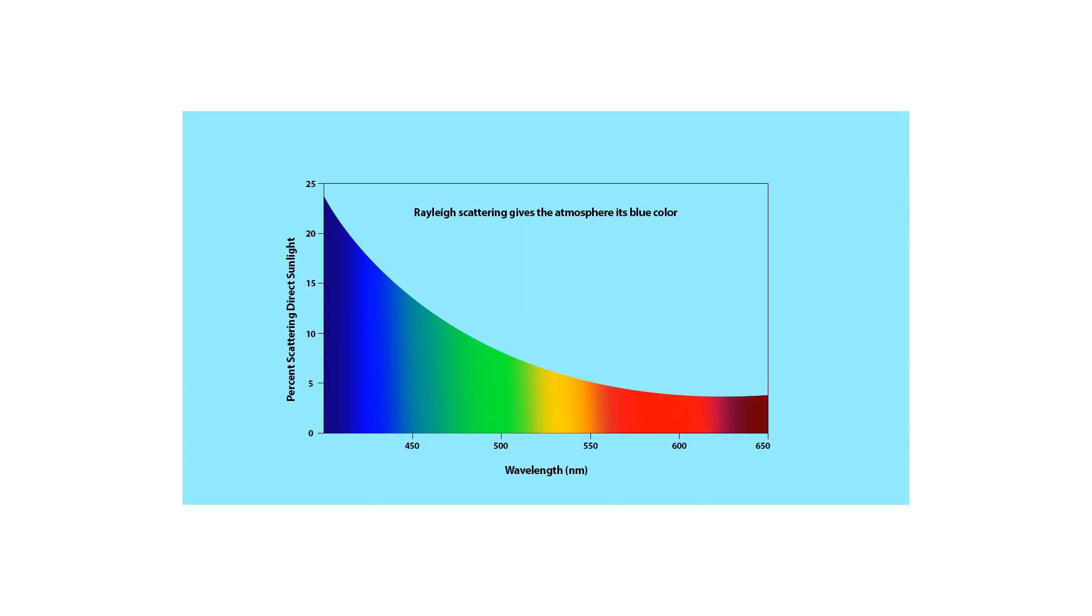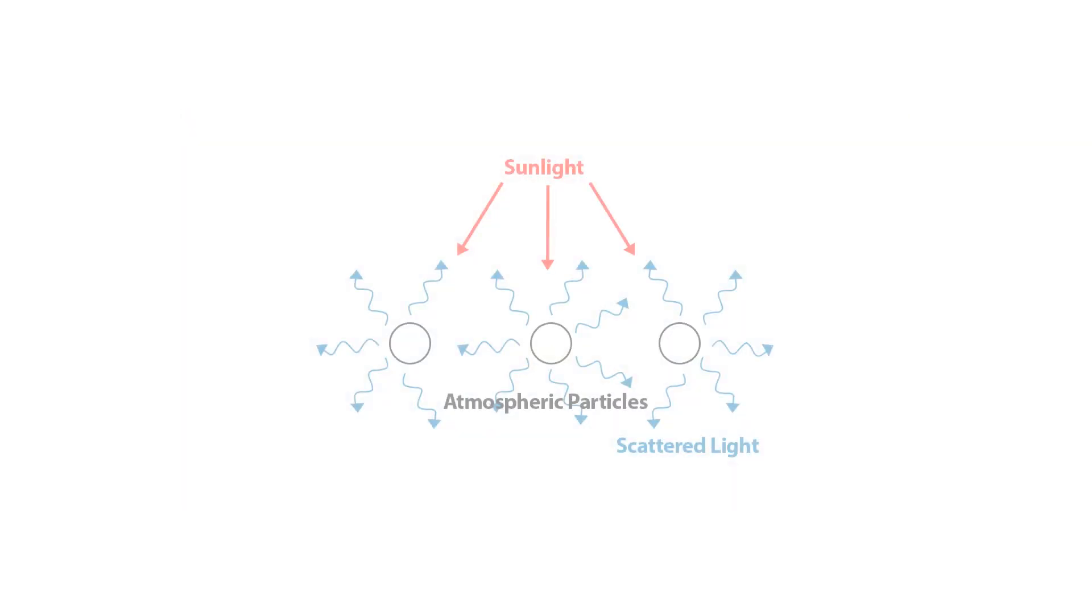From violet to red, remember VIBGYOR. Scattering of light says that blue light of the spectrum is scattered more than the red light. The greater is the frequency of light, or lower is the wavelength, the more it gets scattered.